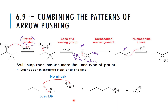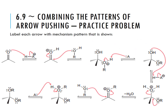Here's a bigger reaction. The question says to label each arrow with the mechanism pattern shown. In the first step, we have an arrow from the oxygen to the hydrogen — we're forming a new bond to a hydrogen, so that gives us a proton transfer. Step two: we're going from this oxygen to the carbon; the second arrow is just showing resonance or the flow of electrons, but this falls under the nucleophilic attack category — oxygen is our nucleophile.